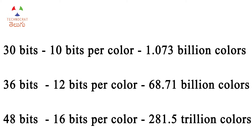In the 36-bit depth, we have 12 bits of color per channel, giving us 68.71 billion colors in total. In the 48-bit depth, we have 16 bits of color per channel, giving us 281.5 trillion colors in total.